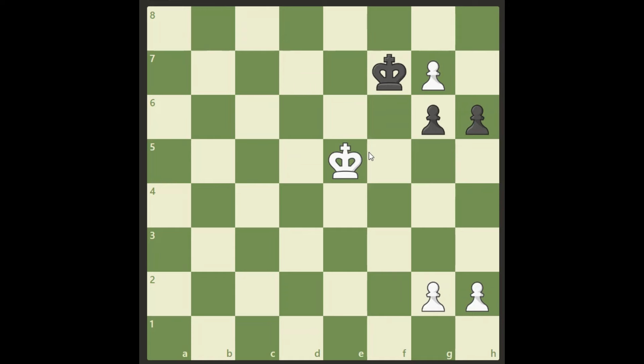So anyway, white to move here and win this. Of course we have just taken a piece here on g7 and the black king has come to f7, and now it's white's turn. So this is a pretty tricky pawn endgame. How can we win this? Well, pause the video and see if you can find out the solution on your own.